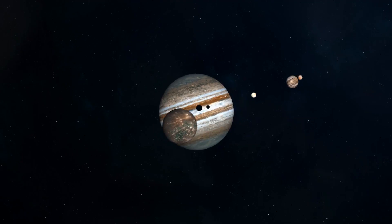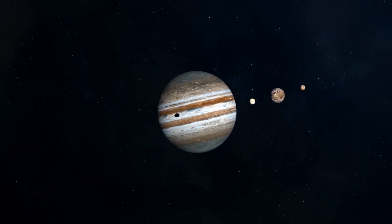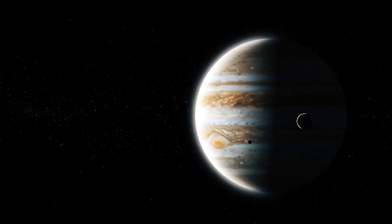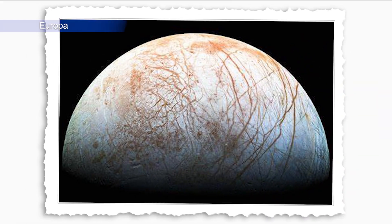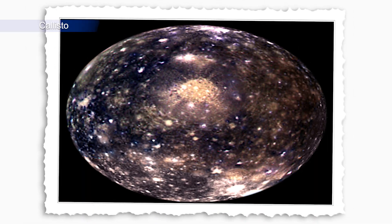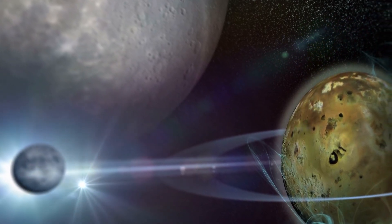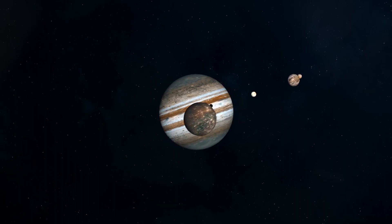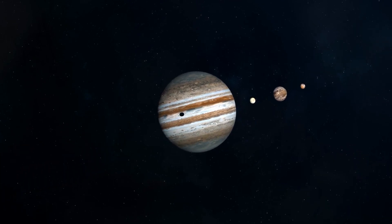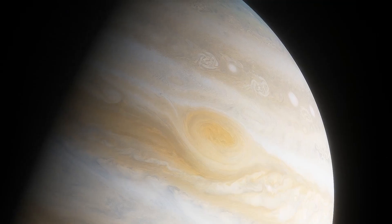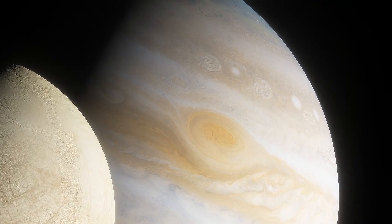Jupiter has several moons, which is an interesting topic to research. The four largest Galilean moons, Io, Europa, Ganymede and Callisto, are among the gas giant's 79 known moons. More research might be done on the interactions between Jupiter and its moons, their geological characteristics, and the possibility that Europa's subterranean oceans support life.